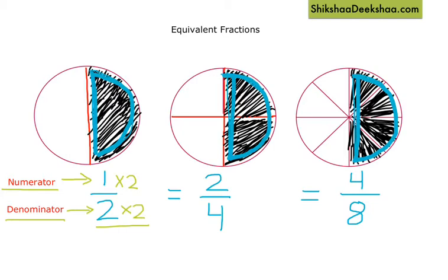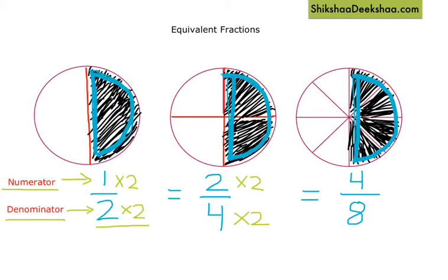Similarly, two by four multiplied by two gives four by eight. So two by four is equivalent to four by eight. Therefore, one by two, two by four, and four by eight are all equivalent fractions.